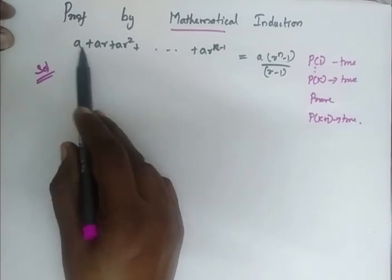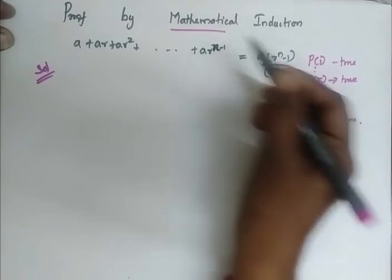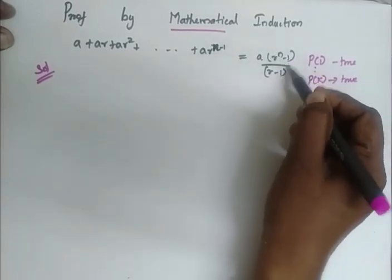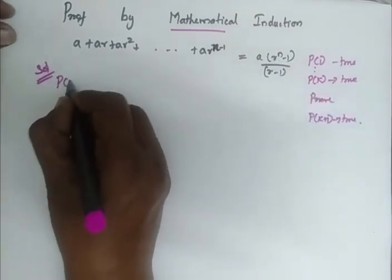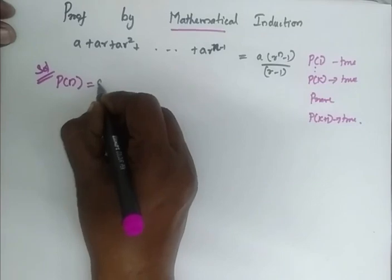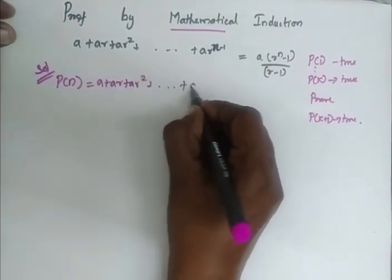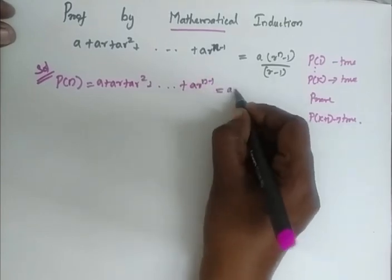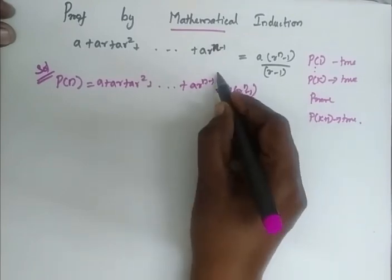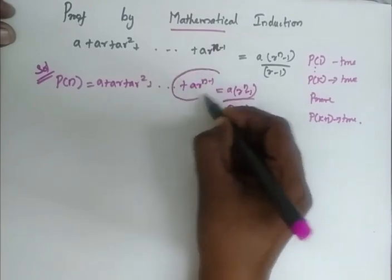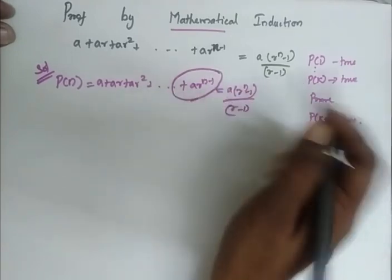I have the series: a plus a r plus a r squared plus etc. till a r power n minus 1, which is equal to a into r power n minus 1, divided by r minus 1. I consider my P of n as this series, where the general term is used to check out the last term in the series.